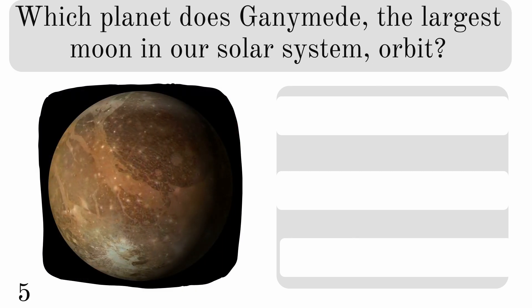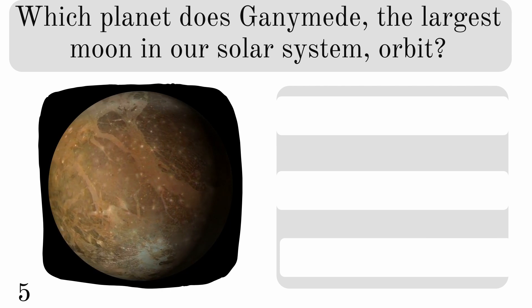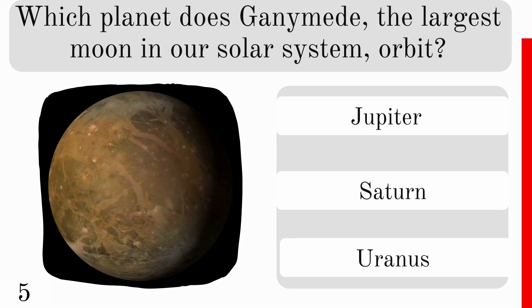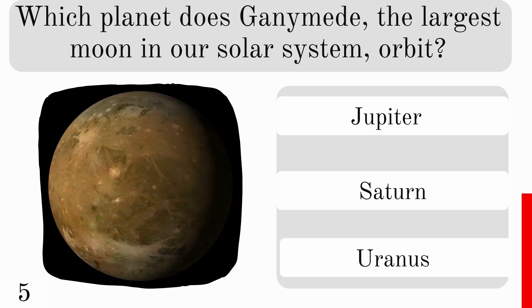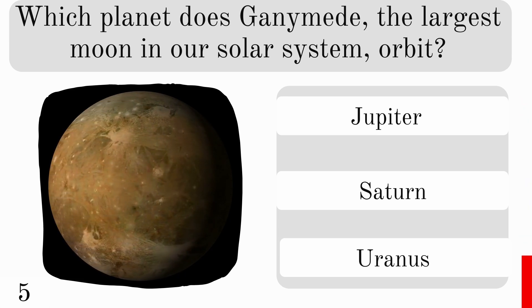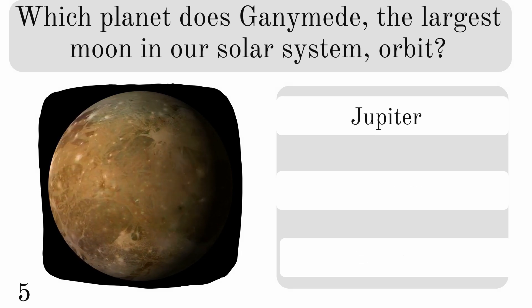Which planet does Ganymede, the largest moon in our solar system, orbit? Is it Jupiter, Saturn, or Uranus? And the answer is Jupiter.